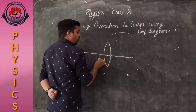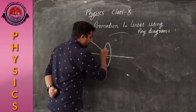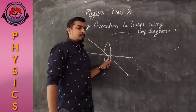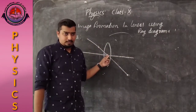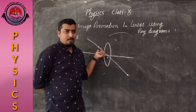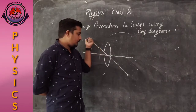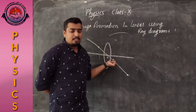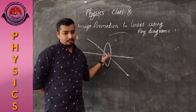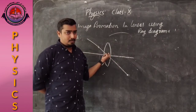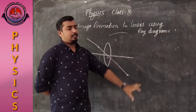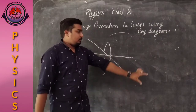The third rule: if the light rays are passing through the optic center, there is no deviation that takes place. If the light beam or the light rays are passing through the optic center, there is no deviation.